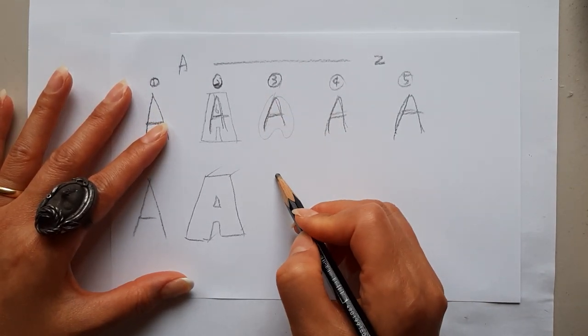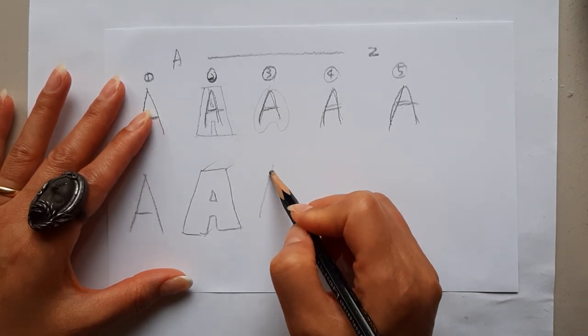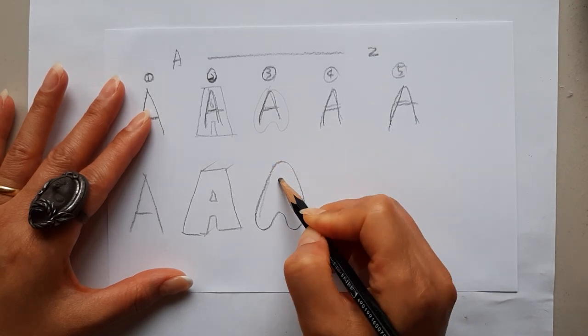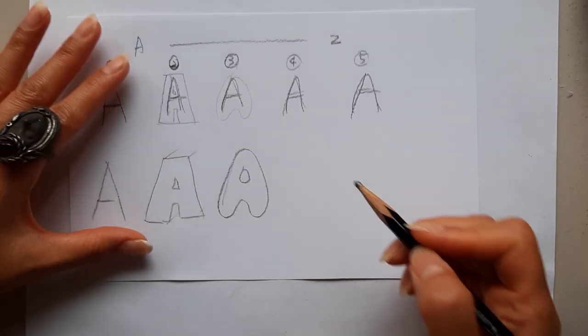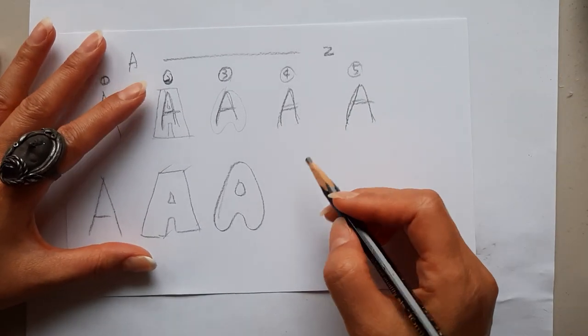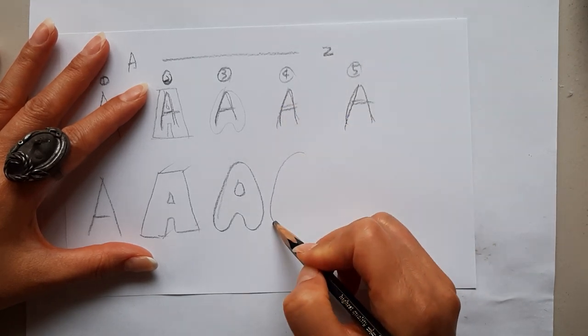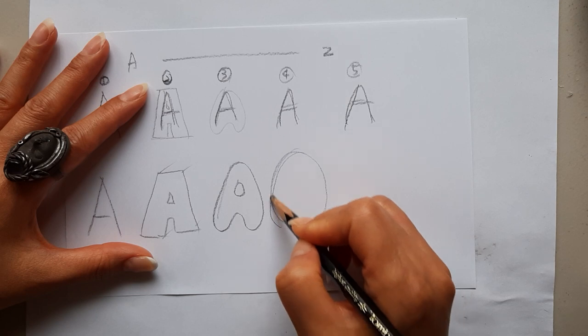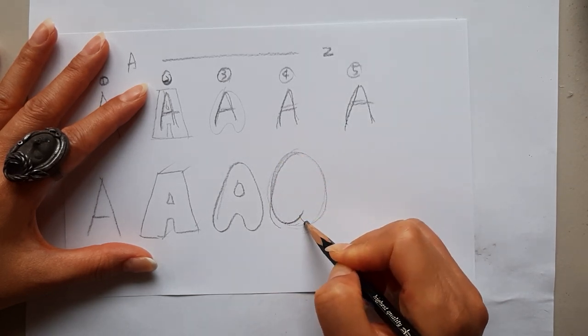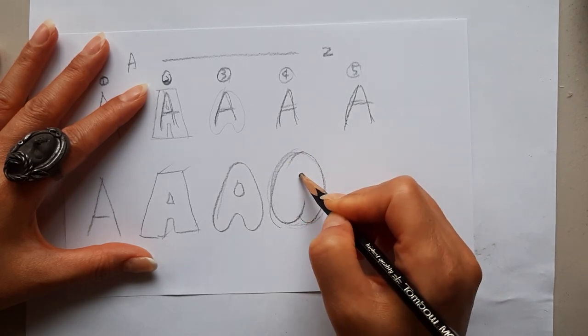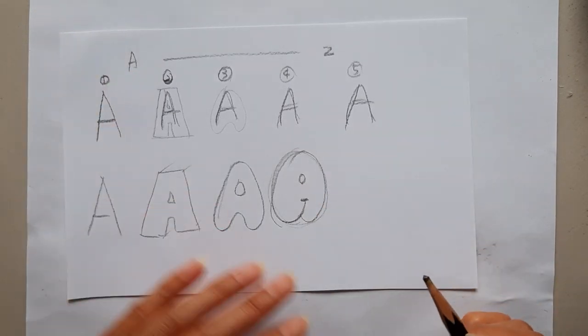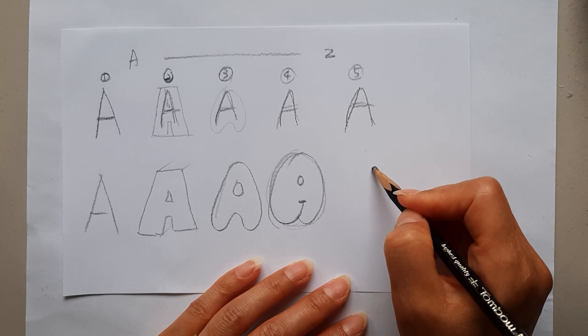So number three, I will put some like a round outline. So, sorry, like a round round. And then number four will be fit in the round like this, and still you can see the space.